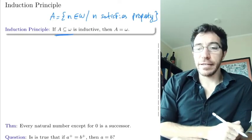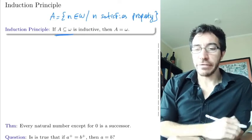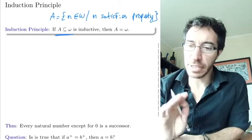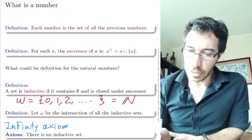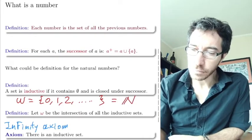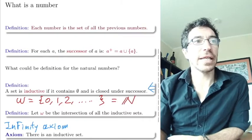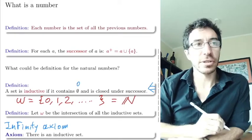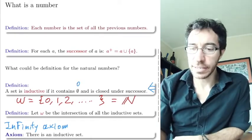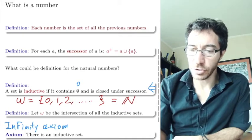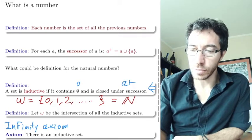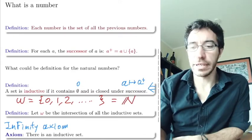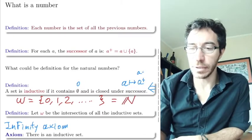The induction principle says that if A is inductive, then A is everything. Let's recall what it means to be inductive. A set is inductive if it contains the empty set — which is the same as zero — and is closed under successor. The successor is a function that goes from A to A-plus, which in the natural numbers is the same as A plus 1.